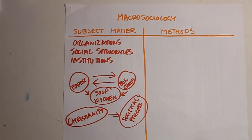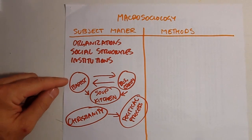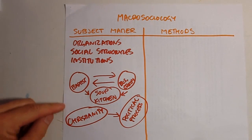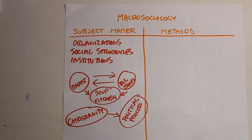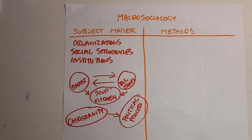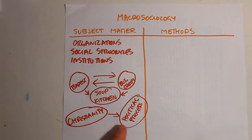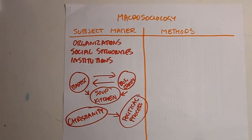One point you may have noticed is that the larger we get, the further away from individuals we get. Christianity is not a few individuals — it is thousands and millions of individuals who, though loosely connected, still have an influence on the political process. Macro-sociology is interested in how this happens.